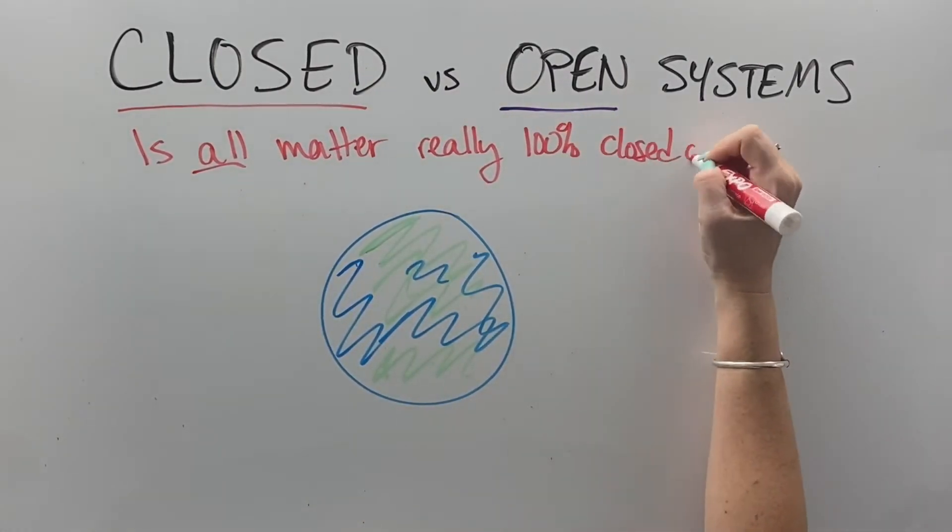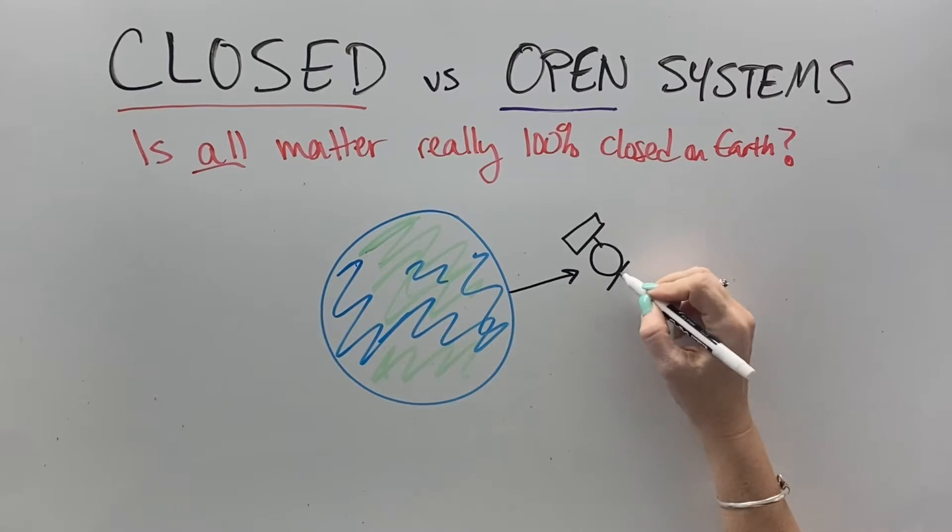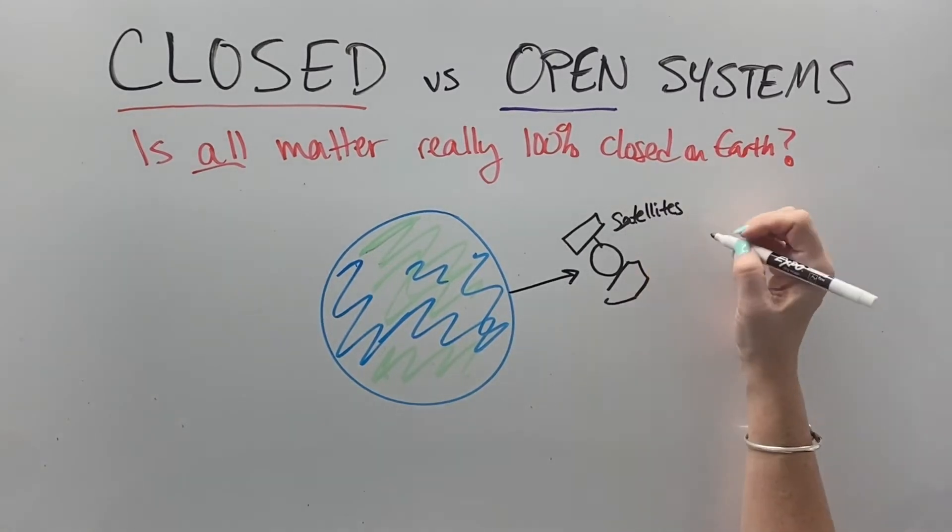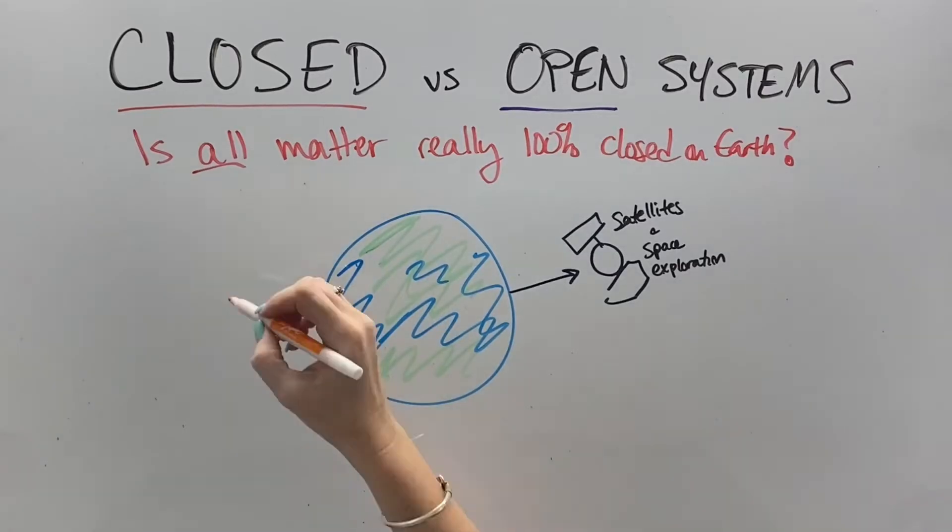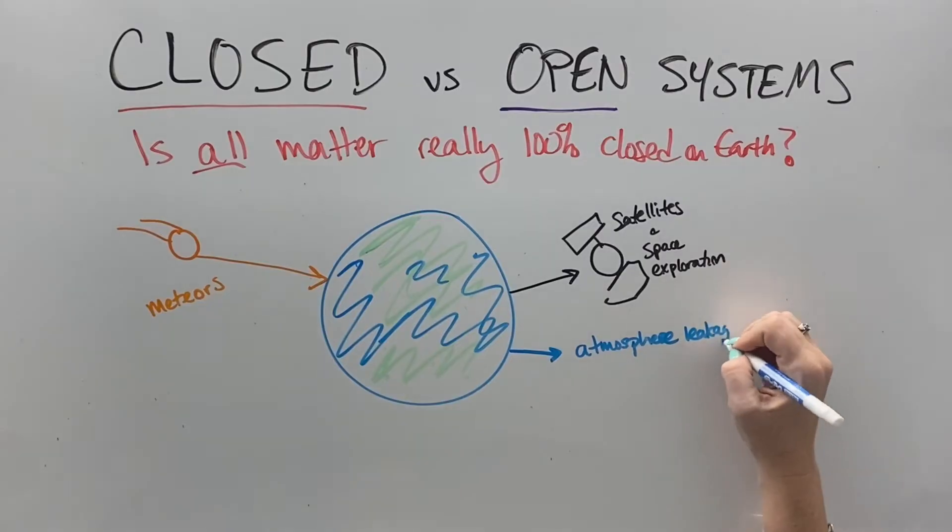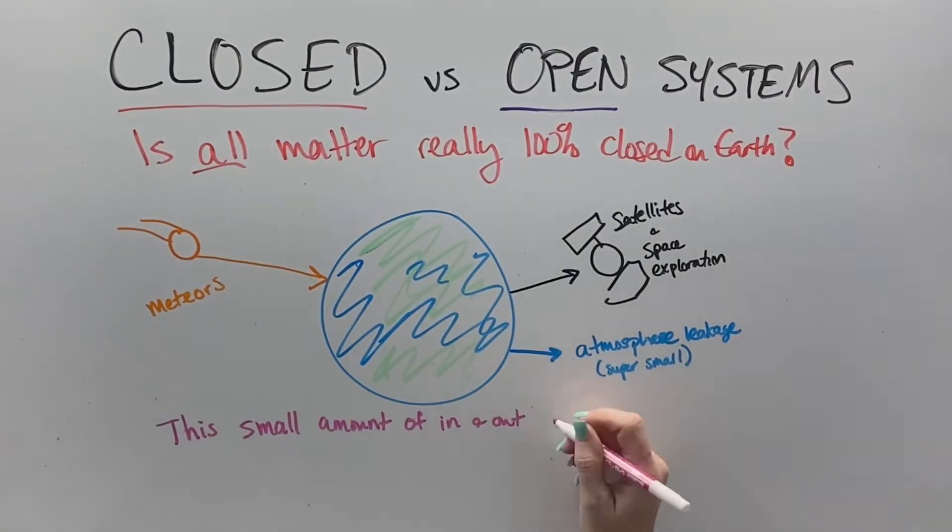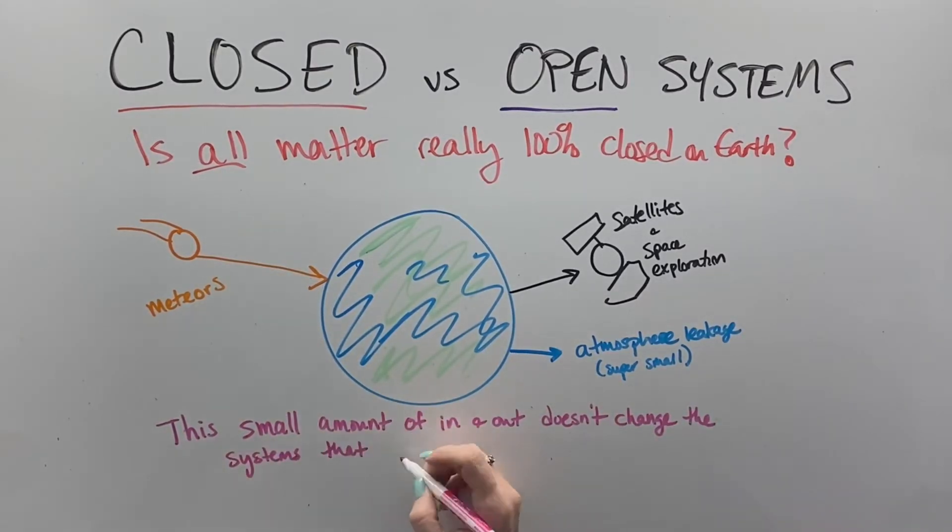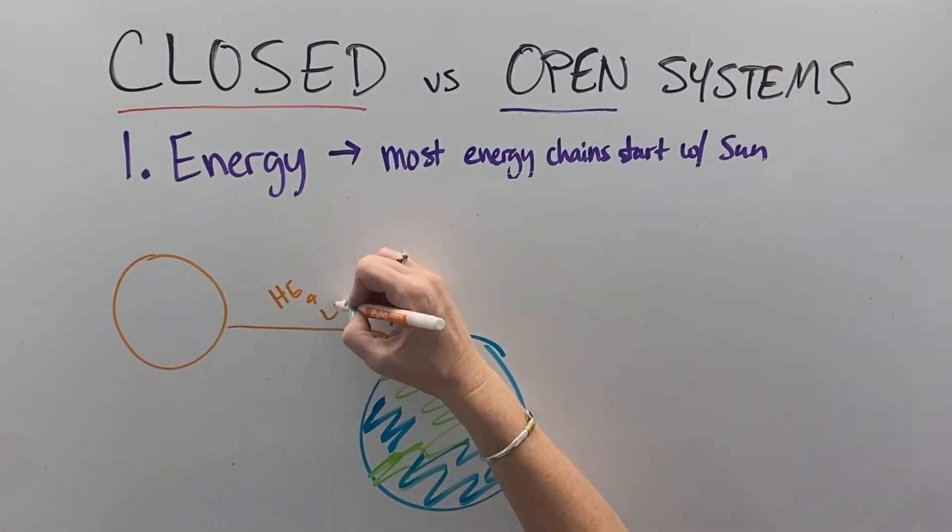So is all matter really 100% closed on earth? Well, okay, you've got me. So occasionally we send matter out, like when we send satellites or things to Mars or whatever, and they don't come back. And then sometimes we do get some things from outside of earth that crash in like meteors. And we get a little bit of atmospheric leakage, but these things don't affect the overall systems the way they work. It's super duper small in comparison to the total amount of atoms. So it doesn't affect the systems, but you're right, it does happen.